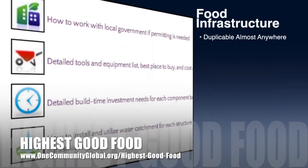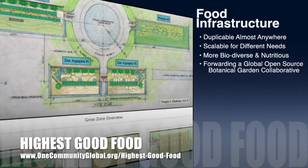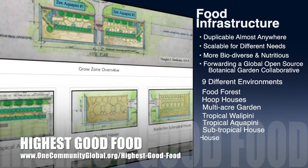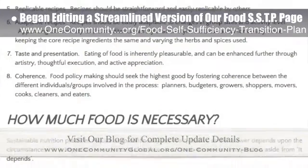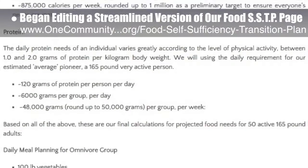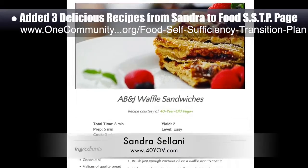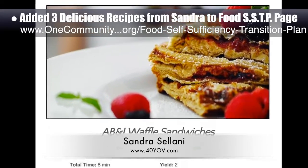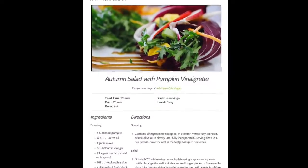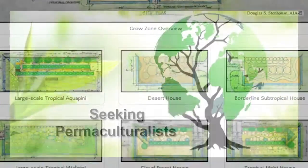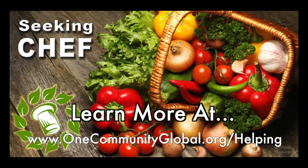One Community's approach to highest good food is duplicable almost anywhere, scalable for different needs, more biodiverse and nutritious, part of forwarding a global open source botanical garden collaborative, and includes nine different free shared and duplicable growing environments. This week the core team began organizing and editing a more streamlined version of our food self-sufficiency transition plan page — approximately 10% complete. We also added three additional recipes from Sandra Salani, vegan chef and author of 'What's Your BQ': ABJ waffle sandwiches, pasta fagioli, and an autumn salad with pumpkin vinaigrette. We are seeking permaculturalists, an irrigation specialist, a surveyor, and a chef.